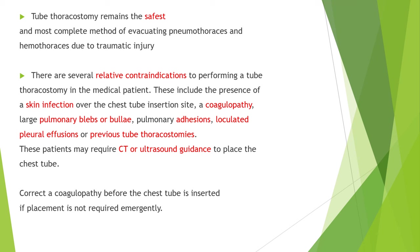There are several relative contraindications to performing a tube thoracostomy. These include the presence of skin infection over the chest tube insertion site, coagulopathy conditions, large pulmonary blebs or bullae, pulmonary adhesions, and loculated pleural effusions or previous thoracostomies. These patients may require CT or ultrasound guidance to place the chest tube. Correct coagulopathy before the chest tube is inserted if placement is not required emergently.